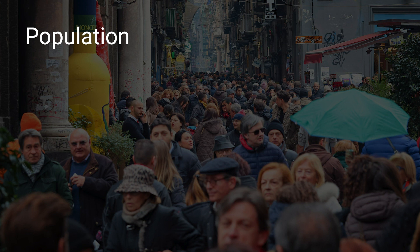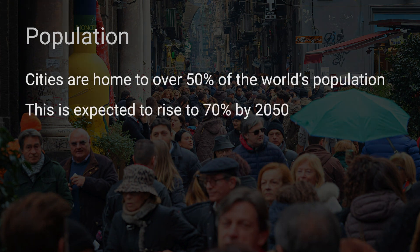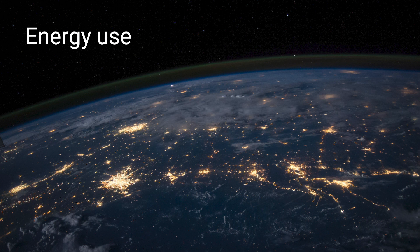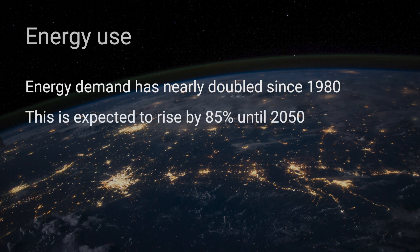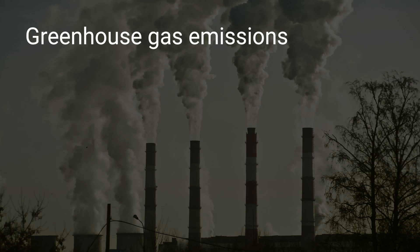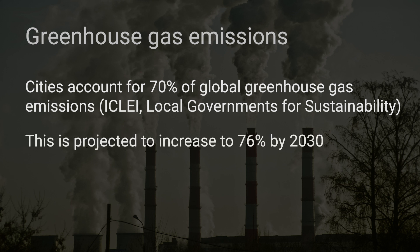Population growth has been the driver of urban growth. According to the United Nations, cities are home to over 50 percent of the world's population, and that's expected to increase to 70 percent by the year 2050. With urban growth comes energy use, and where there is light, there is energy based on fossil fuels for the most part. According to the International Energy Agency, a near doubling of the energy demand has been observed since the 1980s, and that's expected to increase another 85 percent by the year 2050. With energy use comes climate change and greenhouse gas emissions. ICLEI, the Local Governments for Sustainability, estimate that cities account for 70 percent of global emissions, projected to increase to 76 percent by 2030 if we continue at current urbanization trends and economic growth.